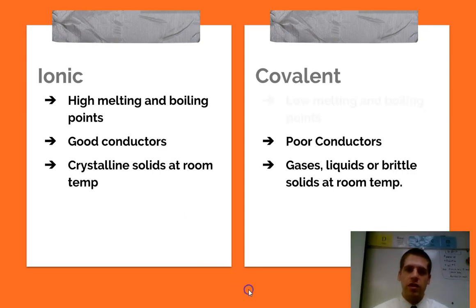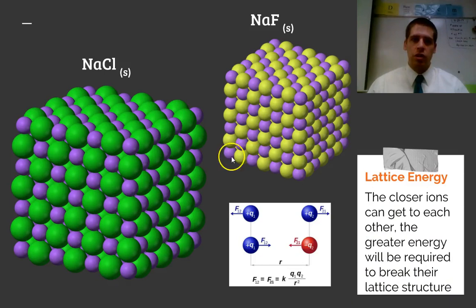They form what's called a lattice structure. And here's a picture of that lattice structure. When you have sodium chloride, you just have positive, negative, positive, negative, positive, negative over and over again in this crystalline structure.